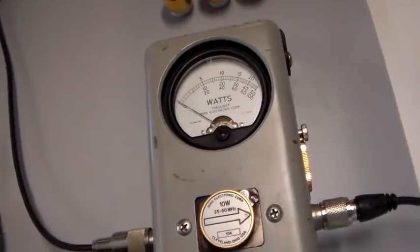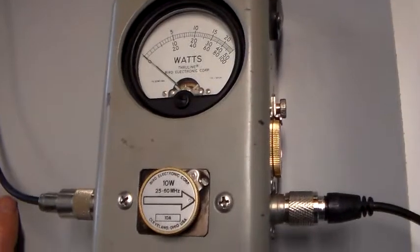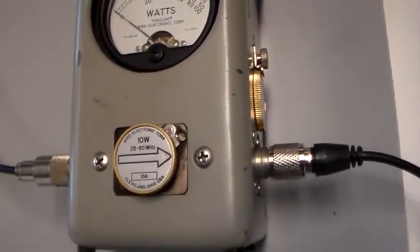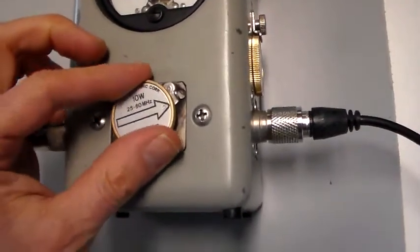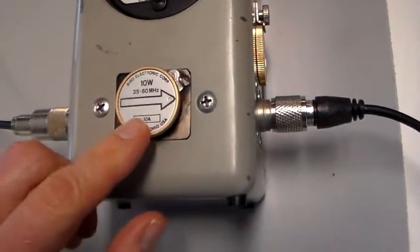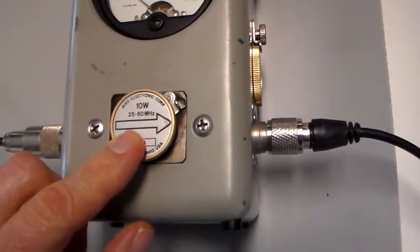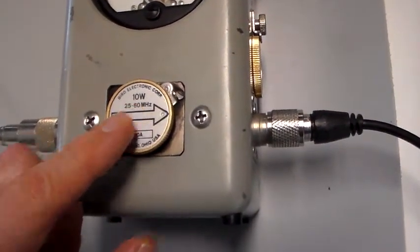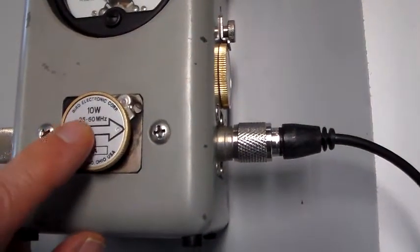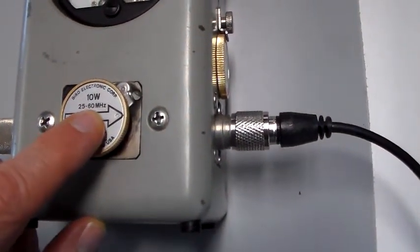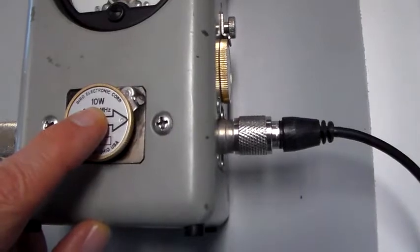Now we're going to take a closer look at how the wattmeter is configured and how it works. This particular model has a number of different plugs that you can insert into this hole in the meter, and each plug is set up for a different frequency range and a different power range. In this case, the plug is set up for 25 to 60 megahertz on a maximum of 10 watts.